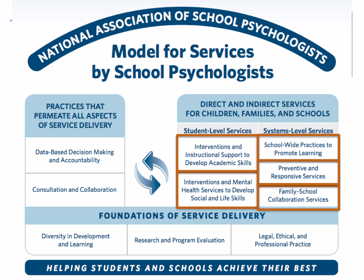Houses also contain common rooms such as the kitchen, living room, and dining room — rooms used by the whole family where changes affect everyone. In the NASP practice model, system-level services are the common rooms. School-wide preventive and responsive services and family-school collaboration all occur at the macro level and affect multiple students. Whether helping develop a class-wide behavior management plan, supporting MTSS screening and intervention planning, or organizing parent training, you are affecting a large group of students.